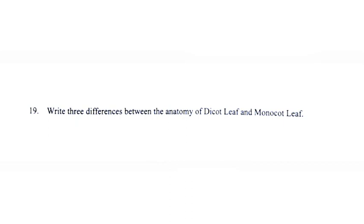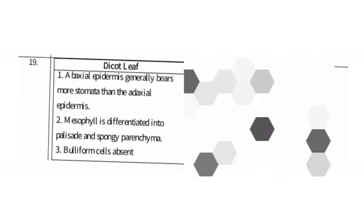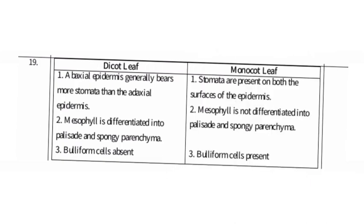Write three differences between the anatomy of dicot leaf and monocot leaf. Dicot leaf: 1) abaxial epidermis generally bears more stomata than the adaxial epidermis; 2) mesophyll is differentiated into palisade and spongy parenchyma; 3) bulliform cells absent. Monocot leaf: 1) stomata are present on both surfaces of epidermis; 2) mesophyll is not differentiated into palisade and spongy parenchyma; 3) bulliform cells present.